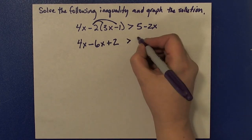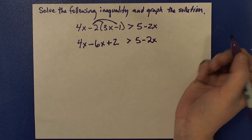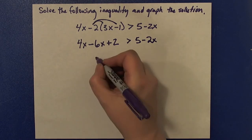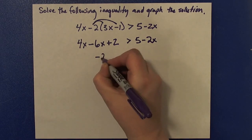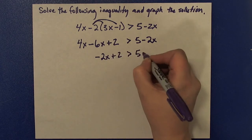On the right-hand side, I just have 5 minus 2x, two unlike terms, so there's nothing I can do to simplify. Coming back to the left, I have like terms I can combine. 4x minus 6x is negative 2x, plus 2. It's greater than 5 minus 2x.